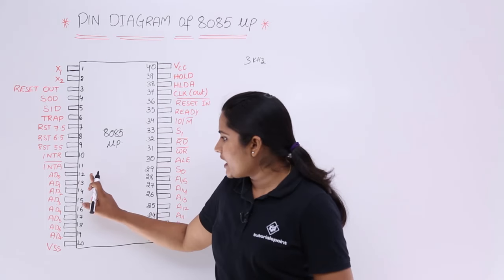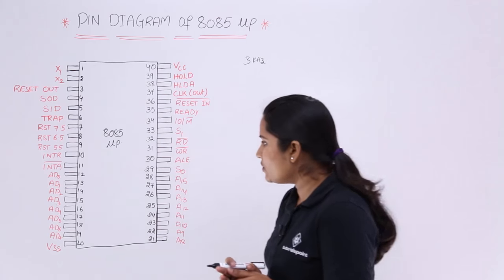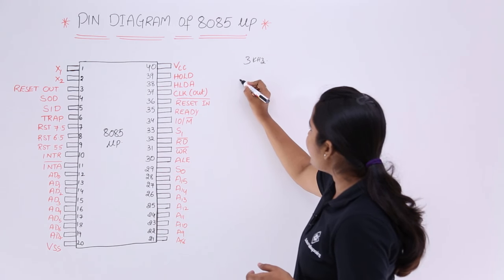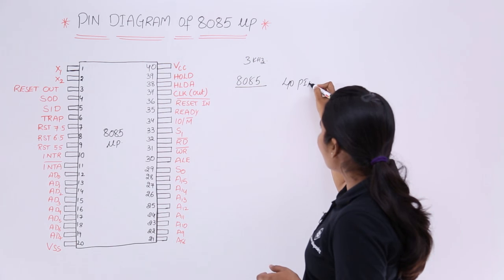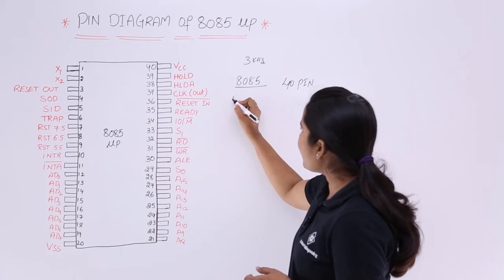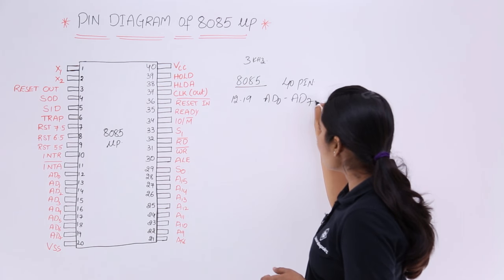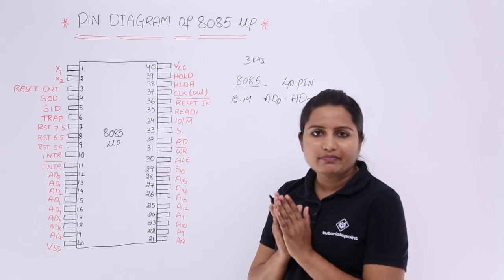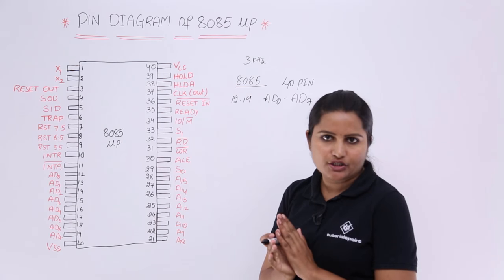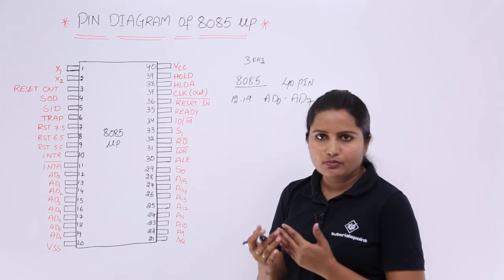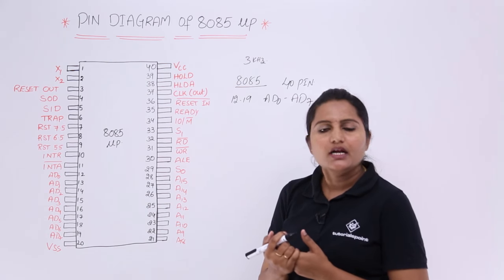From pin 12 to pin 19, those are multiplexed address and data lines. In the 8085's 40 pin IC, from pins 12 to 19 you can observe AD0 to AD7. These are called multiplexed lines — they can perform both addressing and data transfer operations. When they are in lower mode they transfer address, and when in upper mode they transfer data.